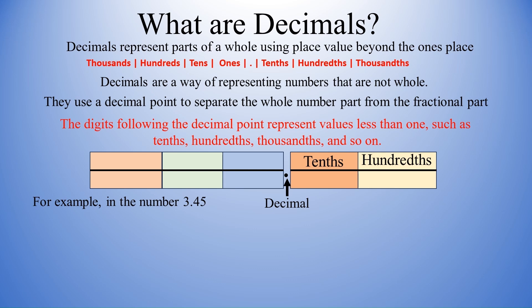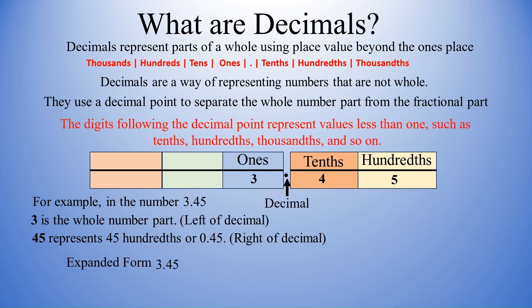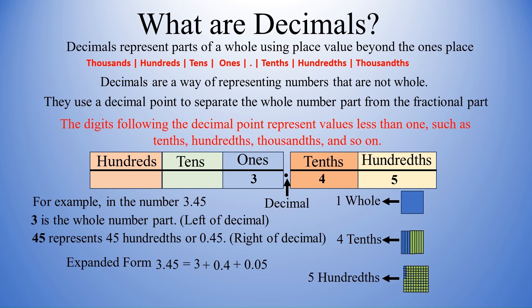Now here is an example: 3.45. 3 is the whole part and to the left of the decimal. And 4 is in the tenths place and 5 is in the hundredths place. Together we can say 45 represents 45 hundredths or 0.45, and that is to the right of decimal. Expanded form of 3.45 is 3 plus 0.4 plus 0.05. One whole you can represent like this. 4 tenths: 4 parts out of 10 parts, and 5 hundredths: 5 parts out of 100 parts.